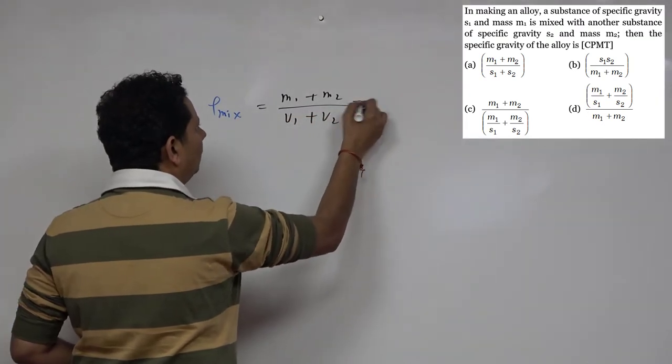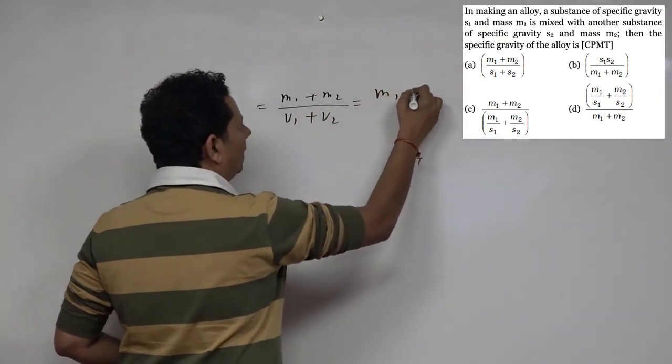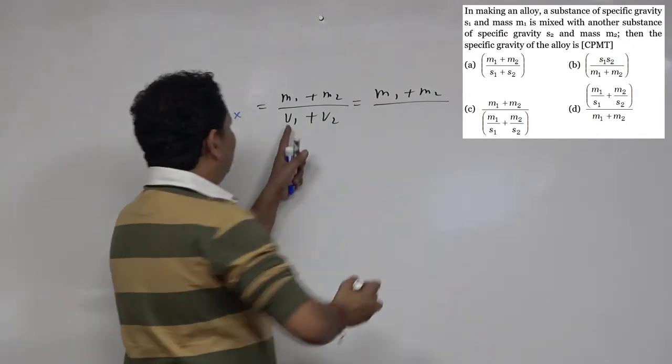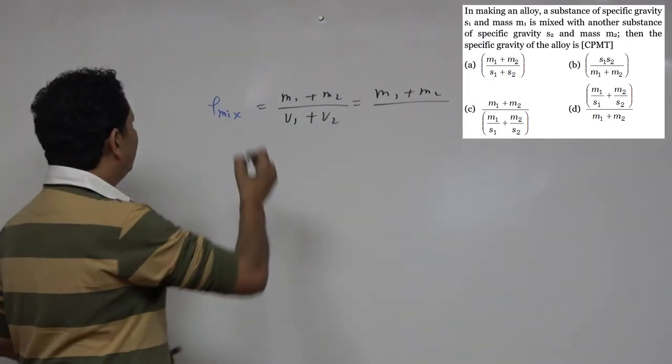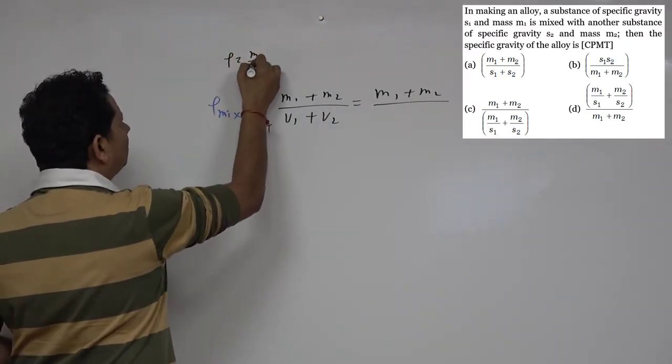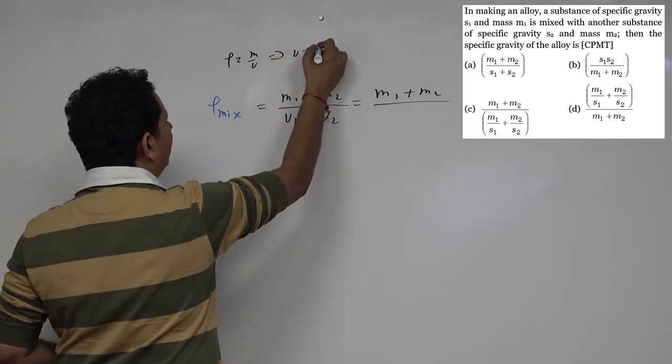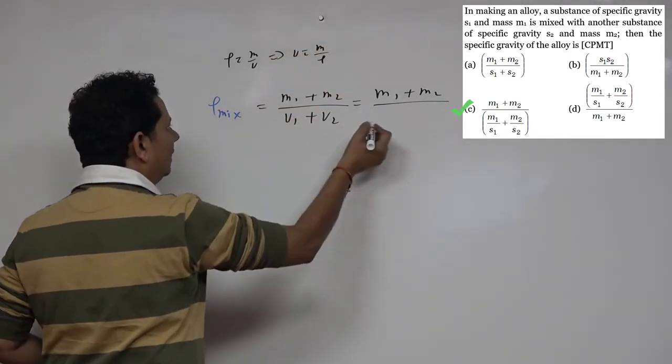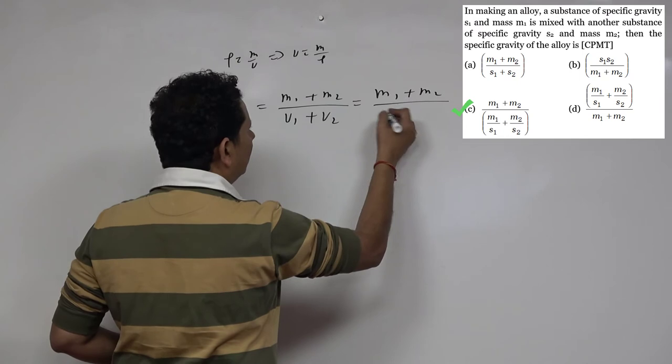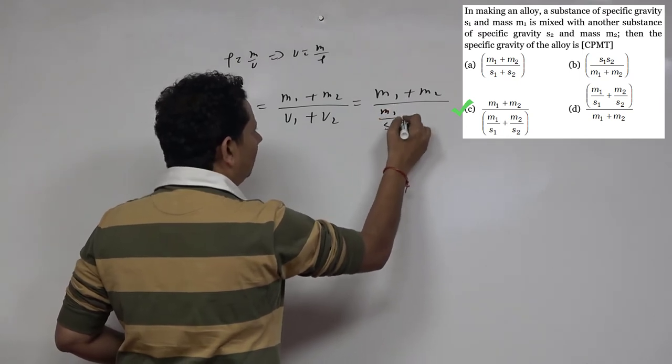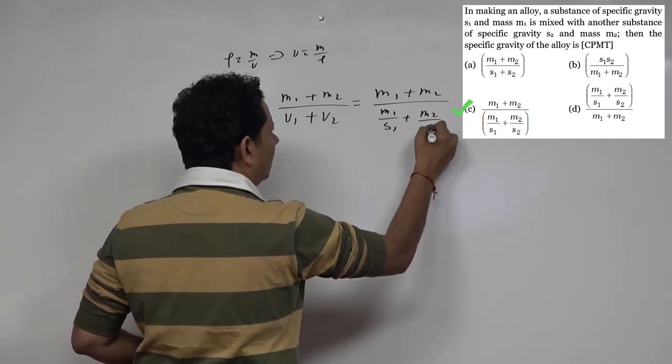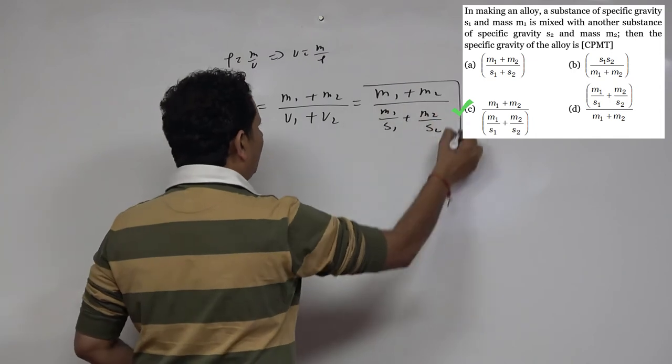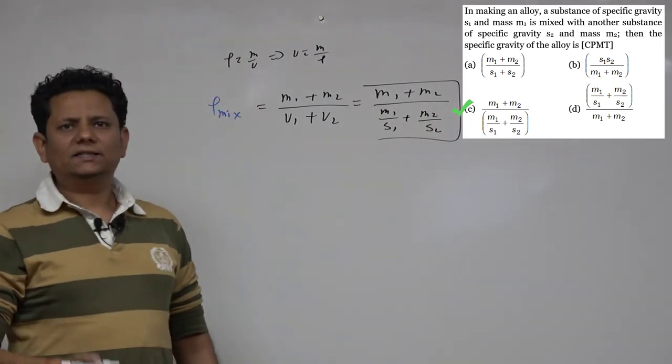Volume 1 plus volume 2, where each volume equals mass divided by density. So the specific gravity of the mixture will be m1 plus m2 divided by m1/s1 plus m2/s2. This is our final answer.